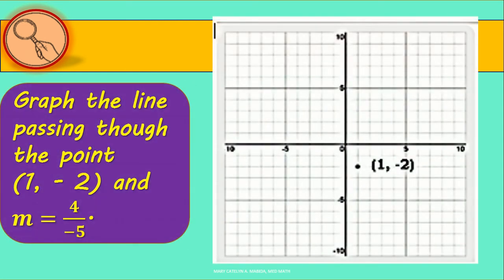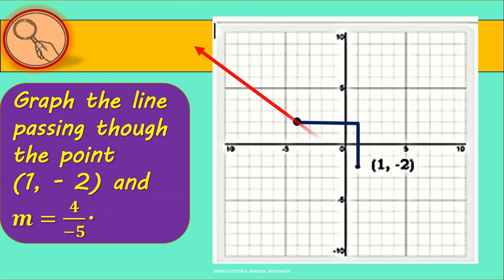Now let us graph the line passing through (1, −2) with slope 4 over −5. Plot the point (1, −2), then from that point go 4 units up and 5 units to the left. Our second point is (−4, 2). Connect the points and there you have it — the graph of the line.